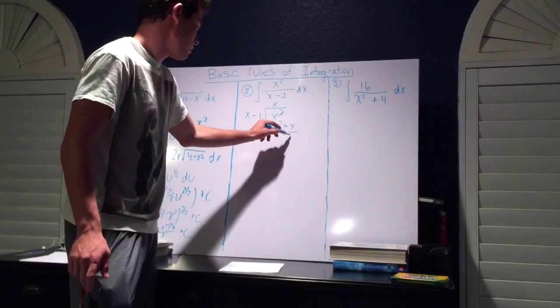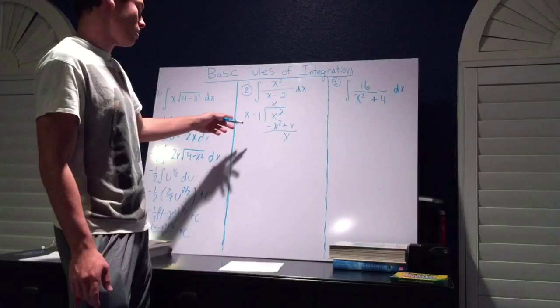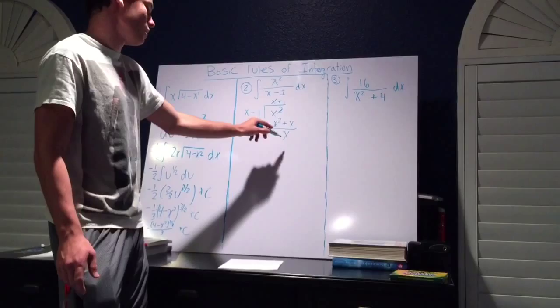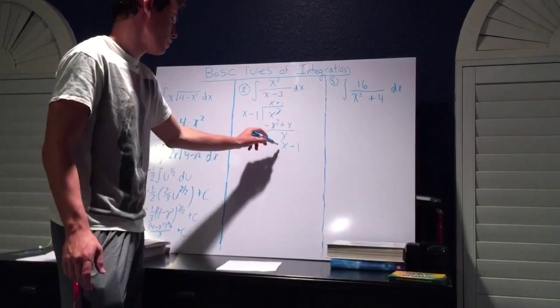Now the degree of what we're dividing by is still the same, so we can do another step. So we're going to do plus 1, and then multiply that here, and then subtract it from here. So we're going to get another x minus 1, and we're going to subtract it so the signs change, and we're left with 1.